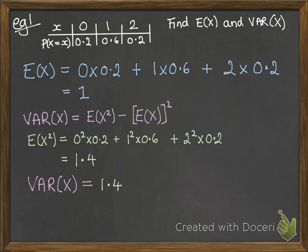Then our variance will be that number, the 1.4 from e of x squared, take away the number that we get from e of x squared.